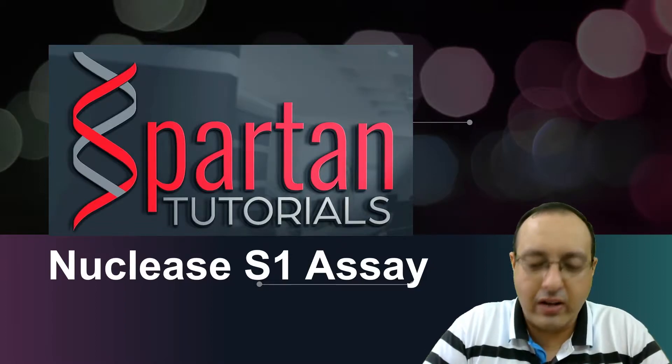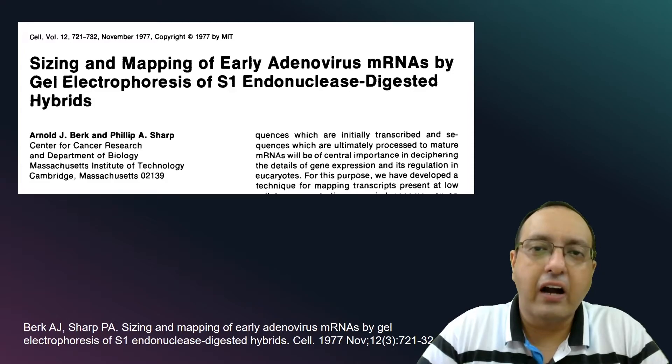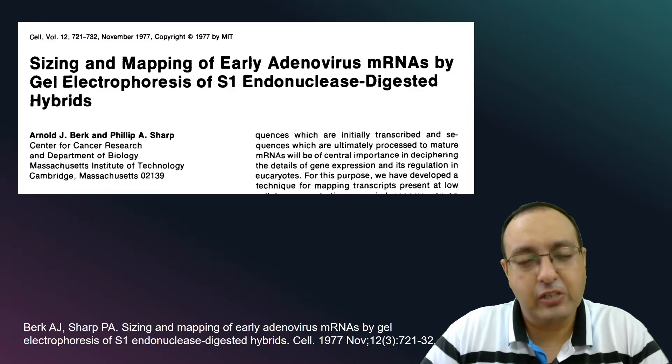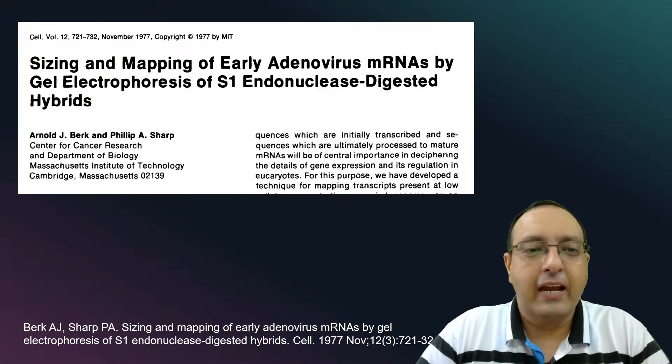So let's get into the nuclease S1 assay. The nuclease S1 assay was developed by Arnie Berk and Philip Sharp. Philip Sharp is the same scientist who discovered splicing. He was awarded the Nobel Prize for his discovery, and this was developed back in 1977.